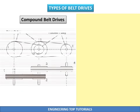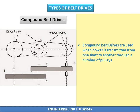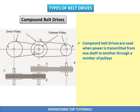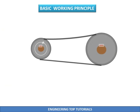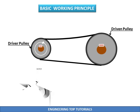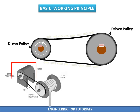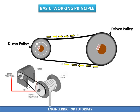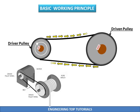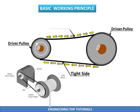Compound belt drives are used when power is transmitted from one shaft to another through a number of pulleys. The basic working principle consists of a driver pulley and a driven pulley. The driver pulley is normally connected to a motor or engine, causing it to rotate. This rotation creates friction between the pulley and belt, and as a result the belt experiences a pulling effect — causing one side of the belt to be tight and the other side to be slack.